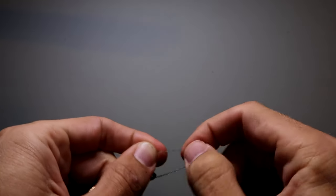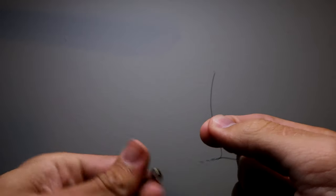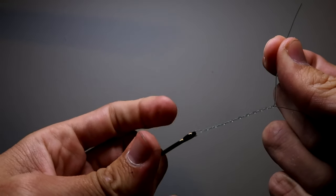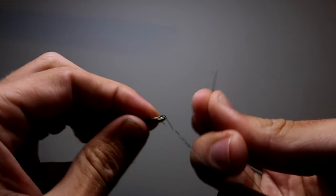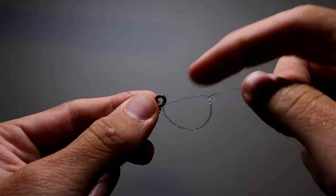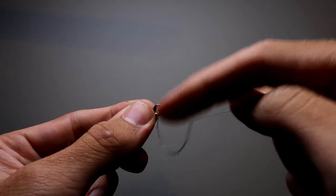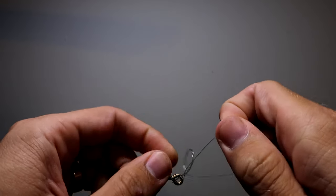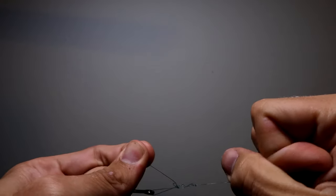And now once we've gone around six times, I've got my tag end here. And then what you'll notice is we've created a little loop next to the eye of the hook right here. I'm going to send that tag end through that little loop. And once we do that, we've created another loop in the line here. You're just going to take that tag end and go back through the bigger loop.